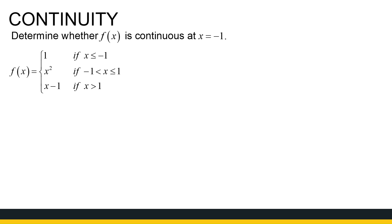We're looking at x equal to minus 1, which is where something happens in this piecewise function. We want to know if it is continuous at that specific x value. If we had the sketch we could easily see what to expect, but we're going to do this without the sketch. There are a couple of aspects we need to look at.